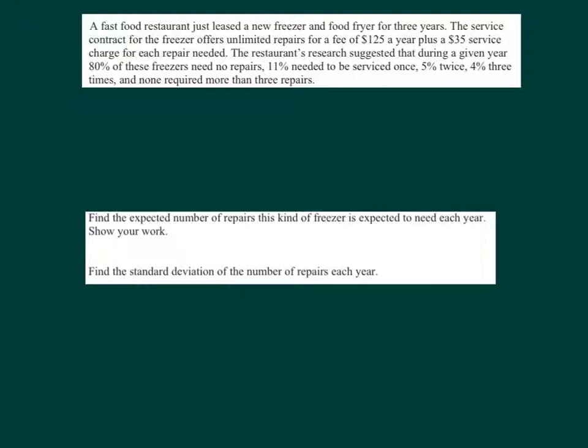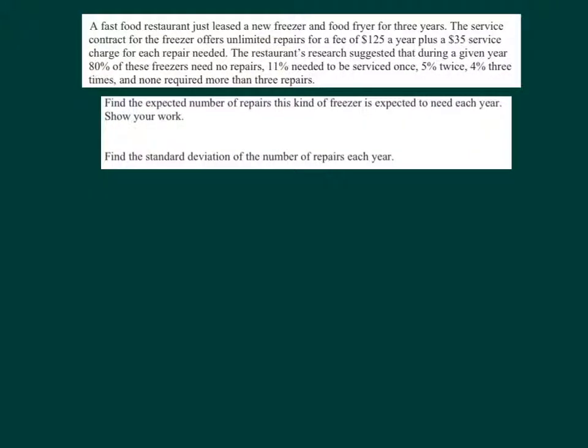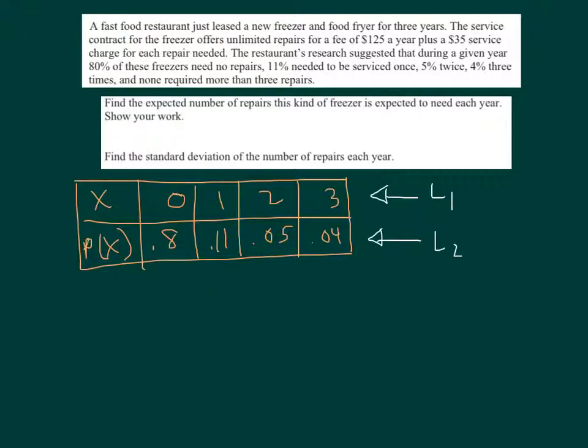Now, the first piece asks us to find the expected number of repairs this kind of freezer is expected to need each year. So the first thing I would do is set up the probability model. Go ahead and take a moment and set up that rectangular box we've been doing in class. Let's keep in mind that in this particular situation, X represents the number of repairs. The number of repairs specifically that the freezer is expected to need in a year. This is going to be a three-year contract, but this model right here represents any particular single year. In a single year, there's about an 11% chance that the freezer will need one repair. There's a 4% chance that it will need three repairs.